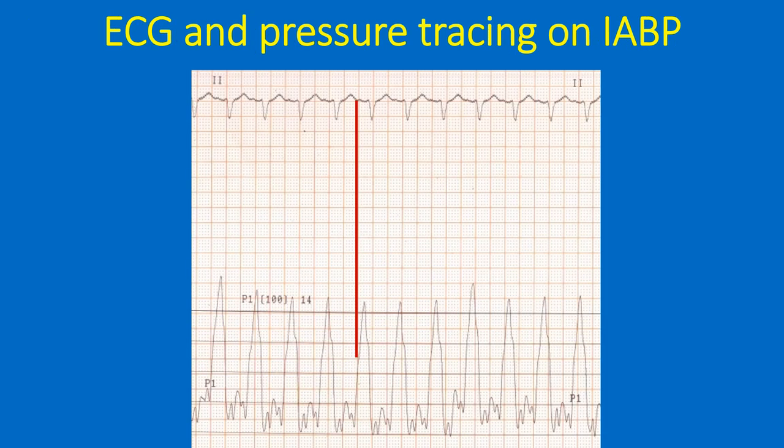Looking at the pressure tracing and ECG while on IABP, the upper channel shows the ECG and the lower channel shows the arterial pressure tracing. It can be clearly seen that the diastolic pressure after the T wave on ECG is much higher than the systolic pressure, because the intra-aortic balloon is inflated in diastole and deflated in systole.